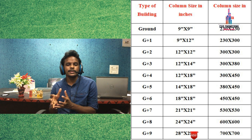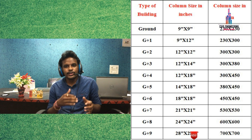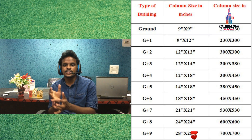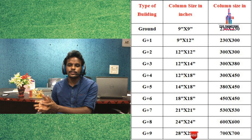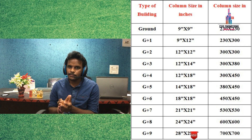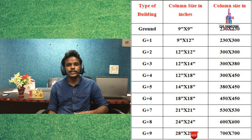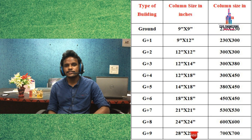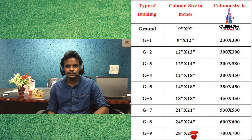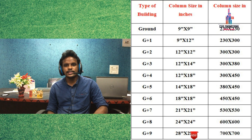For a 10-story building (G+9), the column size is 28 inches cross 28 inches, approximately equal to 700 mm cross 700 mm. These column sizes are based on my personal experience and are not exact or accurate values. This is my explanation for what is the minimum size of the column to consider for a multi-story building. Thank you.